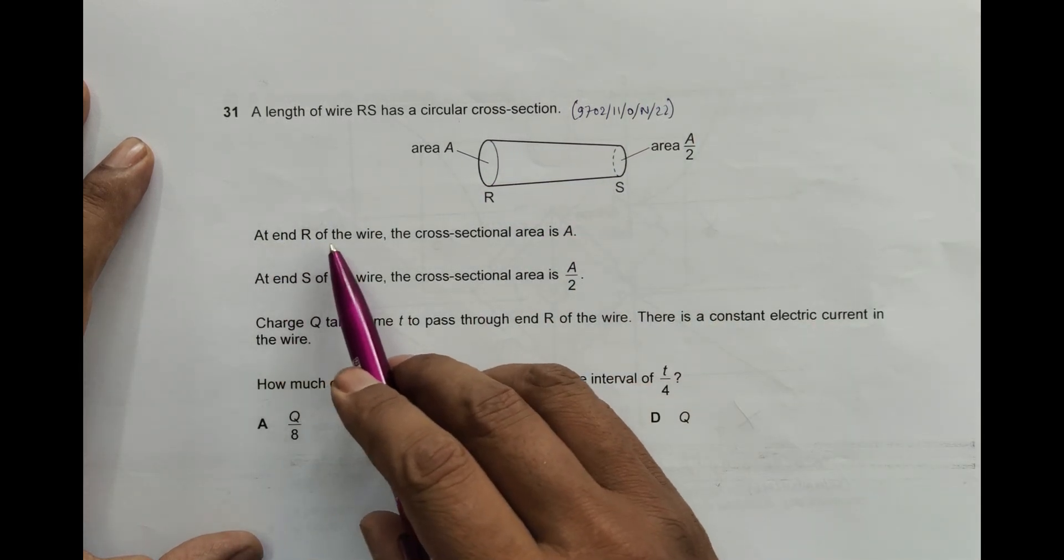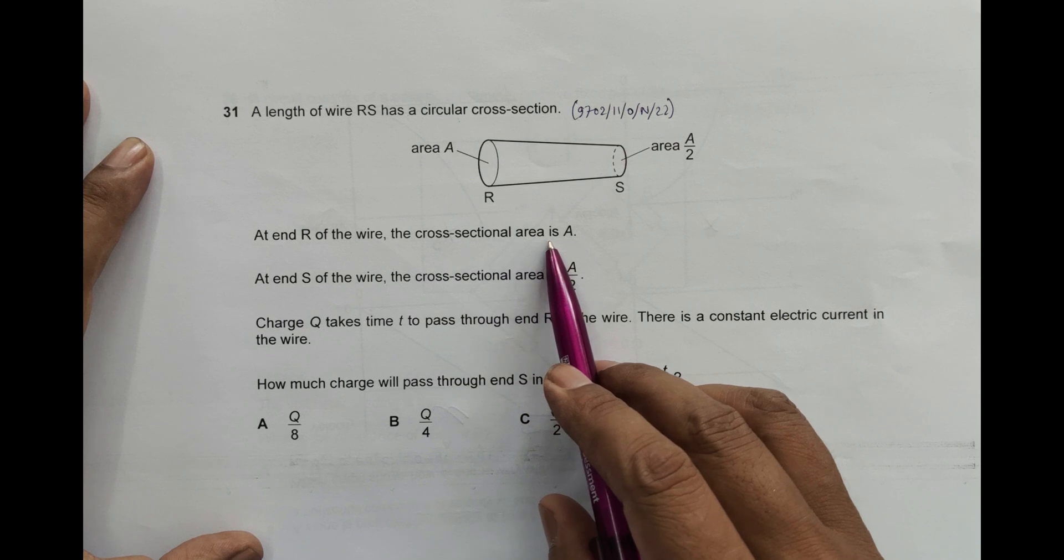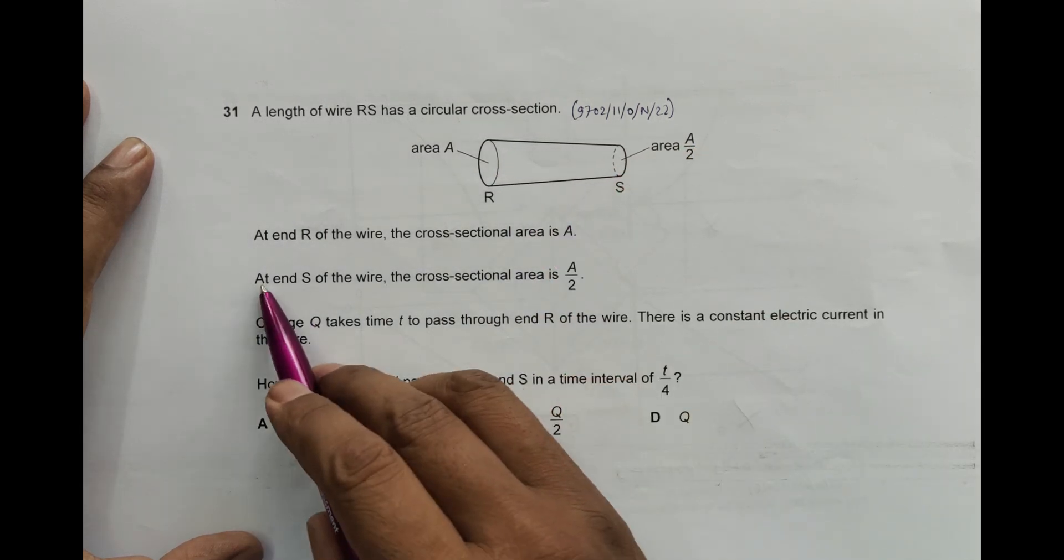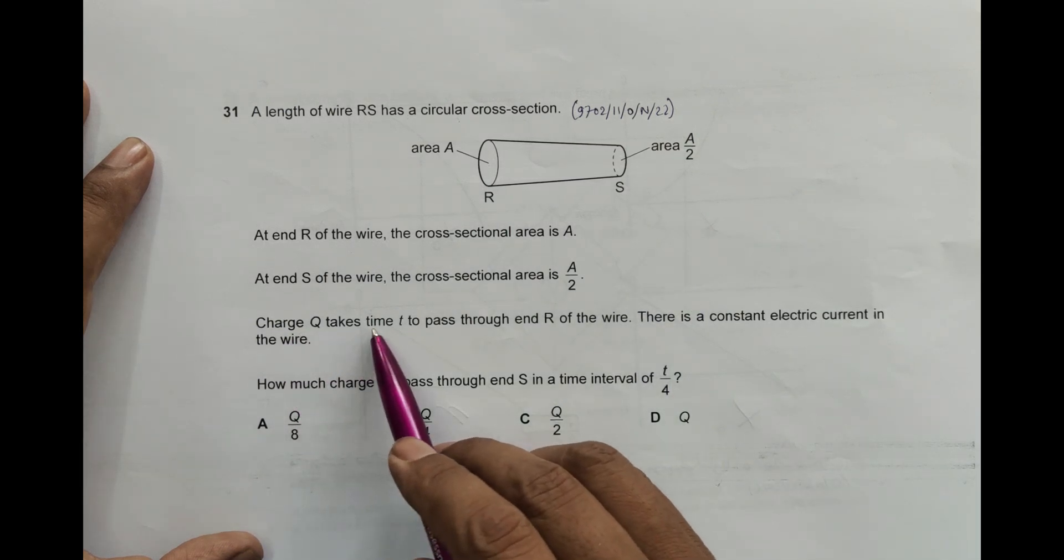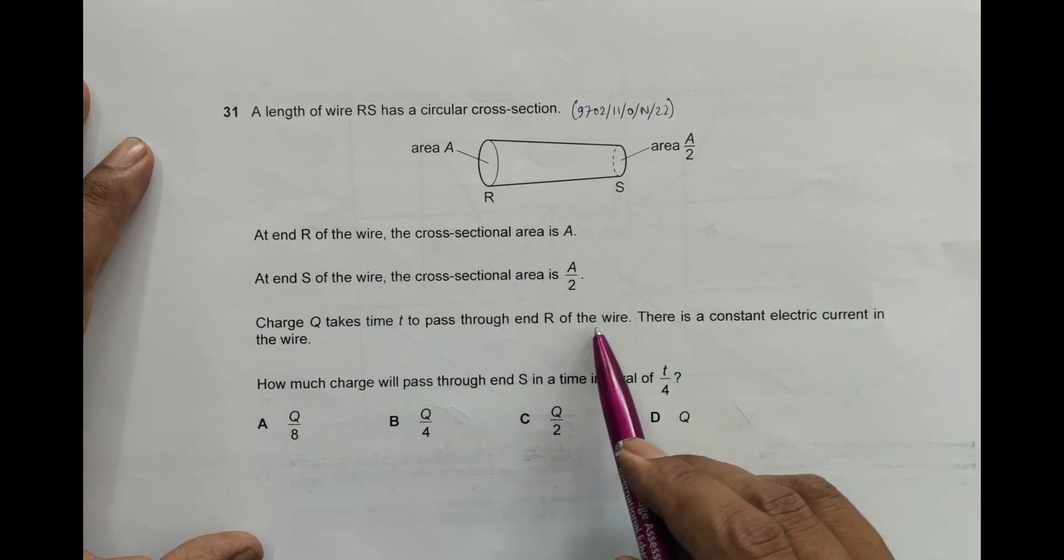At end R of the wire, the cross-sectional area is A. At end S of the wire, the cross-sectional area is A by 2. Charge Q takes time t to pass through end R of the wire.